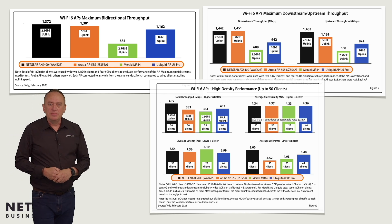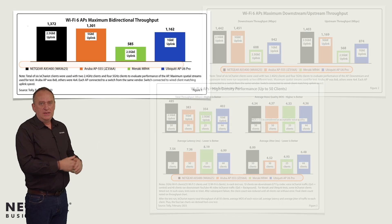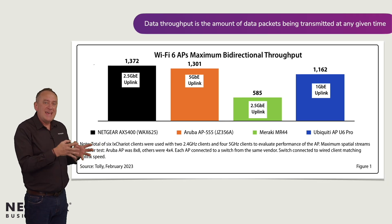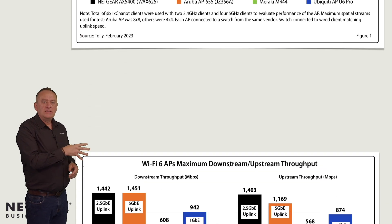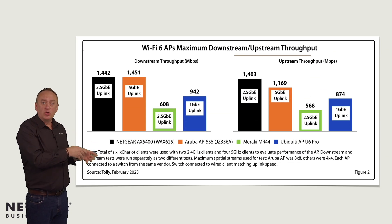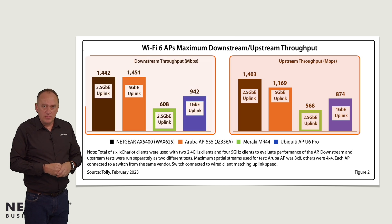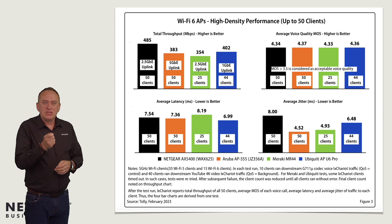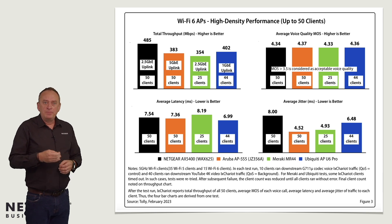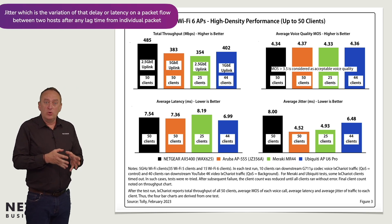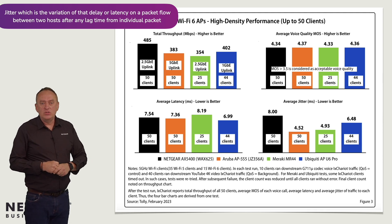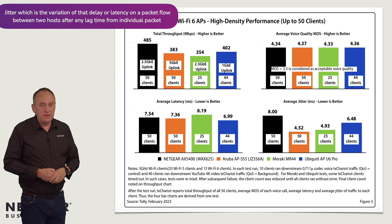And we immediately see the performance advantage is obvious. The first picture shows the total throughput of data — the amount of data packets being transmitted at any given time. The second picture shows a split between the egress or upstream and the ingress or downstream throughput. The third picture identifies the most critical performance comparison: how the access point performs when connected to 50 devices, in terms of lag time or delay, and jitter — the variation of that delay or latency on a packet flow between two hosts. The results speak for themselves.